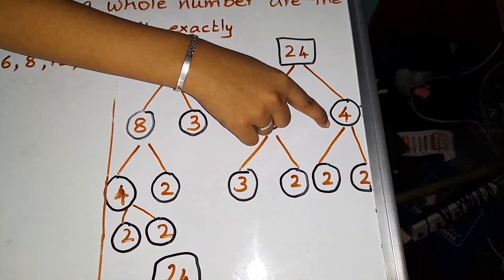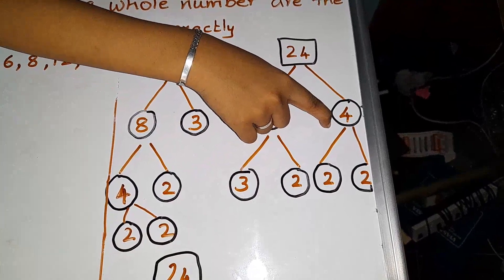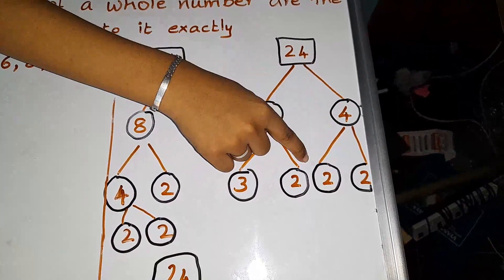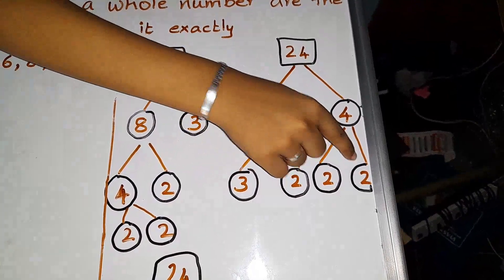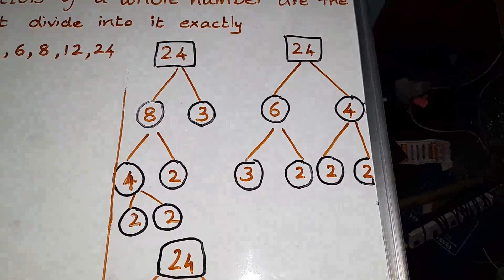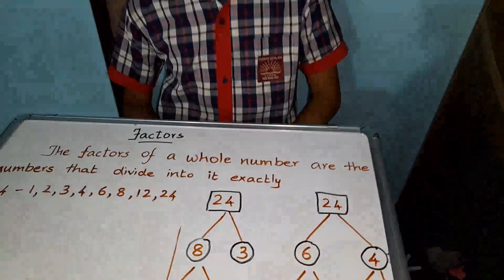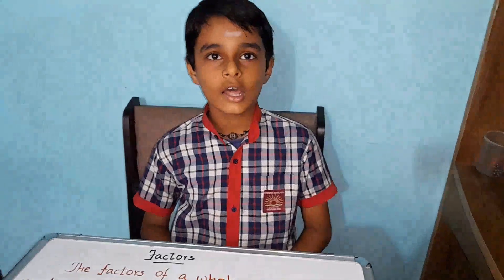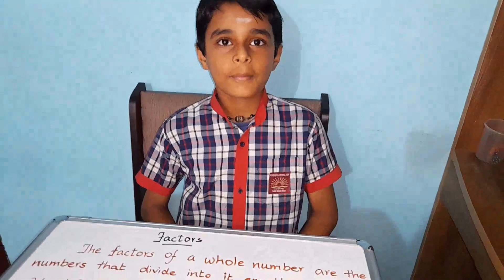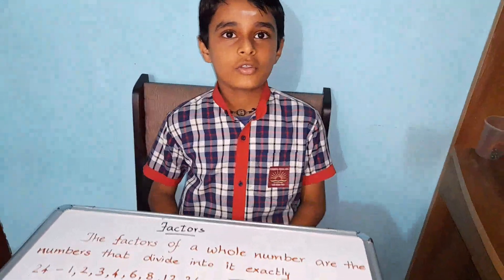4 can also be factorized. 2 times 2 equals 4. Both 2s are prime numbers, so we have to stop there.